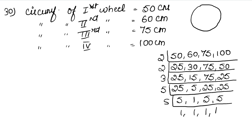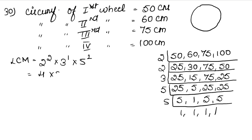So our LCM is 2² × 3¹ × 5² = 4 × 3 × 25 = 300 cm.